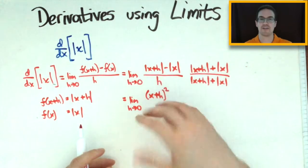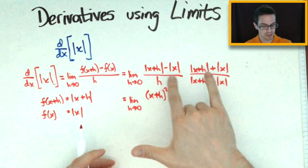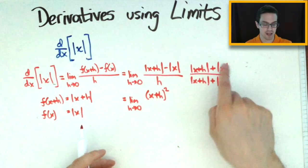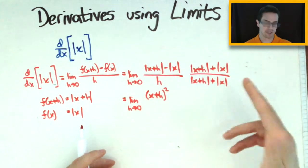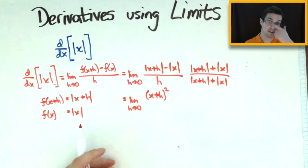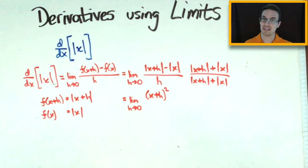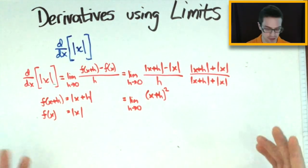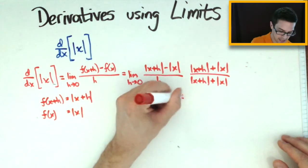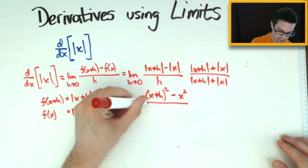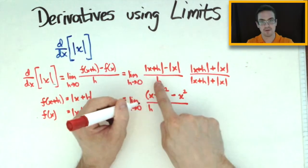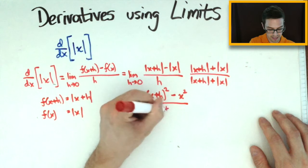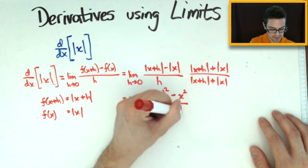We don't need to worry about the middle terms because they cancel with the conjugate. For the last two terms, the absolute value of x times the absolute value of x is x squared — and since it's x squared it's already positive, so no absolute value bars needed. That gives us minus x squared. All of this is over h times the denominator: the absolute value of x plus h plus the absolute value of x.